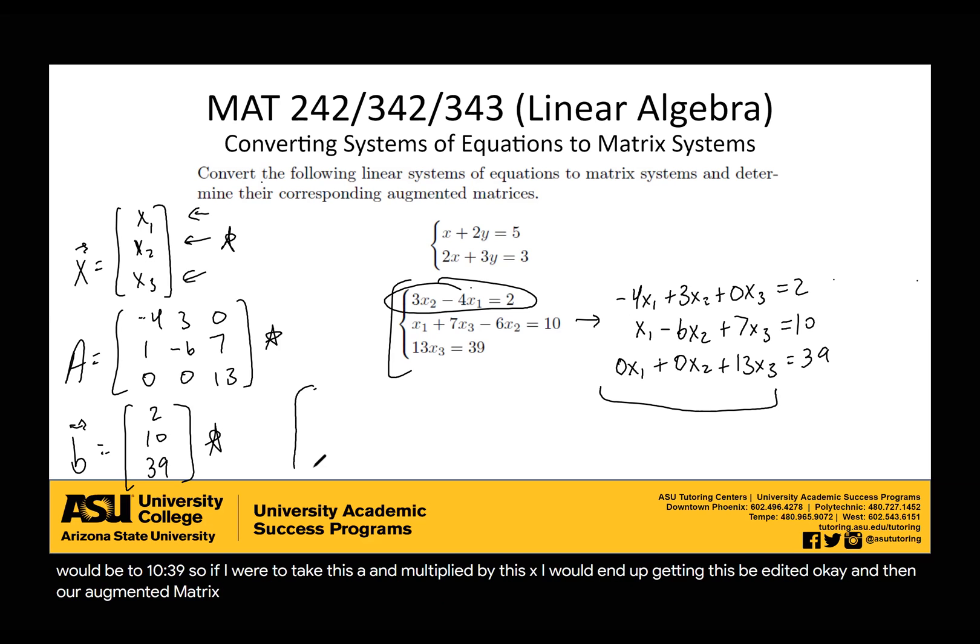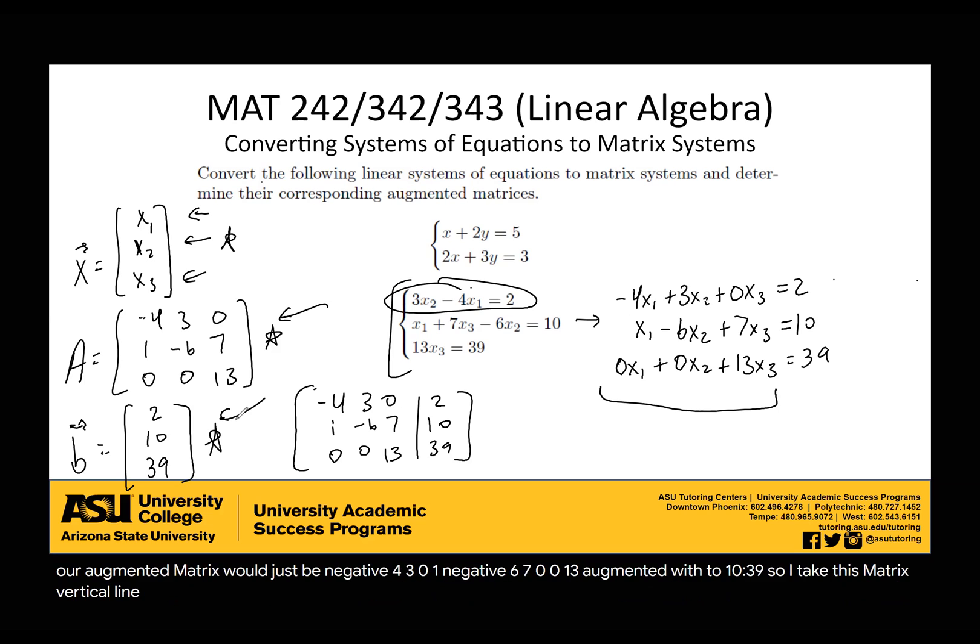And then our augmented matrix would just be [-4, 3, 0 | 2; 1, -6, 7 | 10; 0, 0, 13 | 39]. So I take this matrix, vertical line, that vector. So now we know how to convert linear systems of equations into matrix systems. Once we have it in a matrix system, we can start doing the linear algebra to simplify it down and more easily find our solutions.